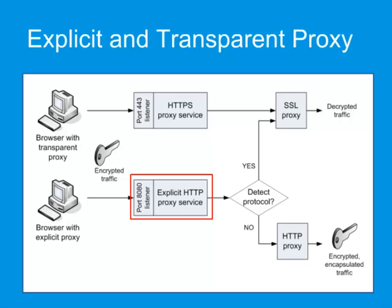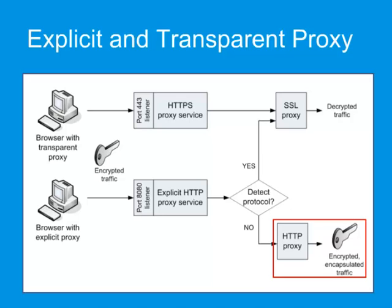By default, the explicit HTTP proxy service uses the HTTP proxy, so if nothing else were done to the incoming traffic, it would not be processed by the SSL proxy and would not be decrypted. To change this, use the detect protocol setting in the configuration for the explicit HTTP proxy service. When this setting is enabled, the ProxySG identifies the HTTPS traffic and directs it to the SSL proxy for decryption and processing.